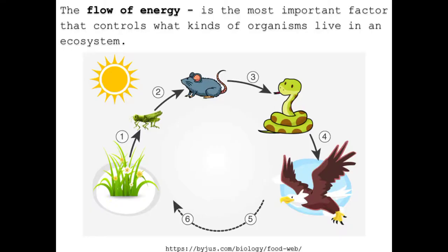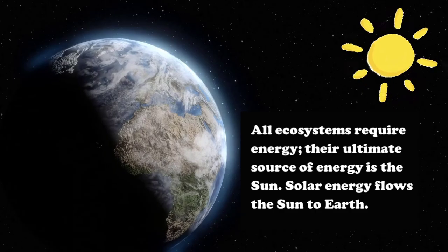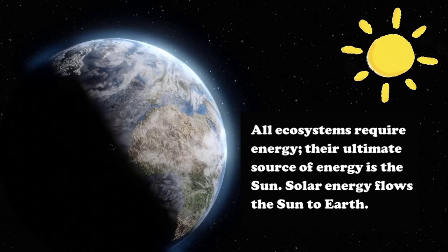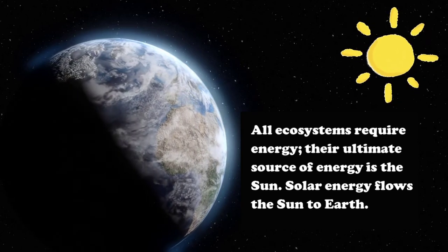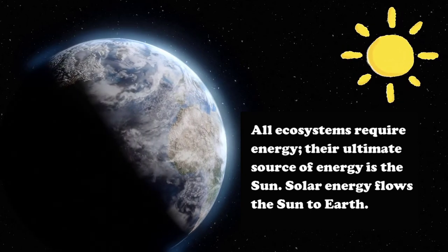The flow of energy is the most important factor that controls what kinds of organisms live in an ecosystem. All ecosystems require energy, and their ultimate source of energy is the sun.